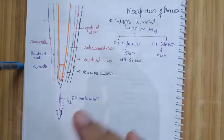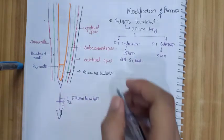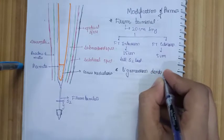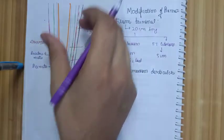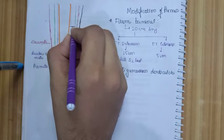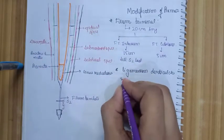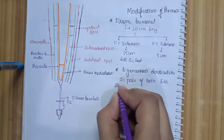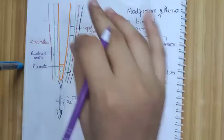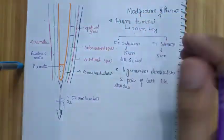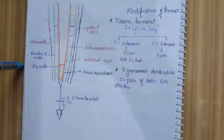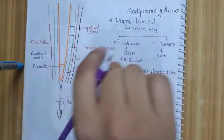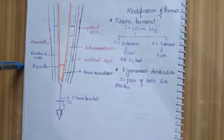The filum terminale ends at the posterior surface of the body of the coccyx. The next modification is the ligamentum denticulatum. To keep the spinal cord in position so it does not slip down, there are around 21 pairs of tooth-like projections coming from the pia mater. These project into the arachnoid mater and dura mater and keep the spinal cord in place.